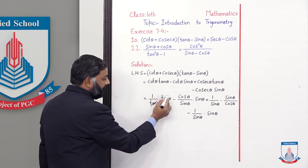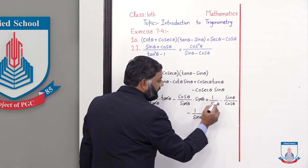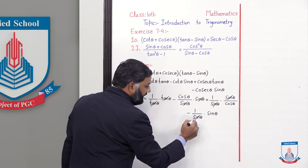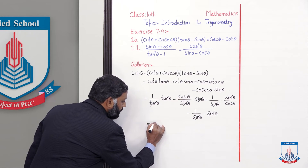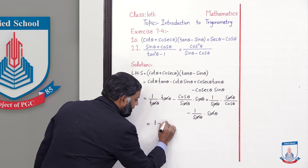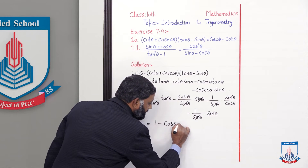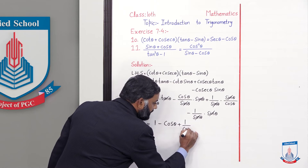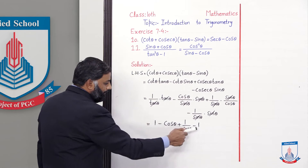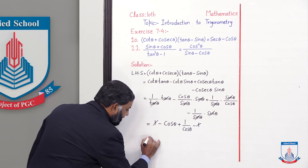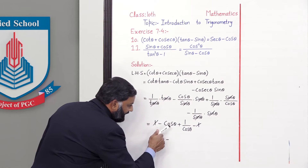In the first term, tan θ · tan θ cancels. In the next term, sin θ cancels. Here sin θ cancels, and here sin θ cancels. First term remaining is 1, minus cos θ, plus 1/cos θ, minus 1.